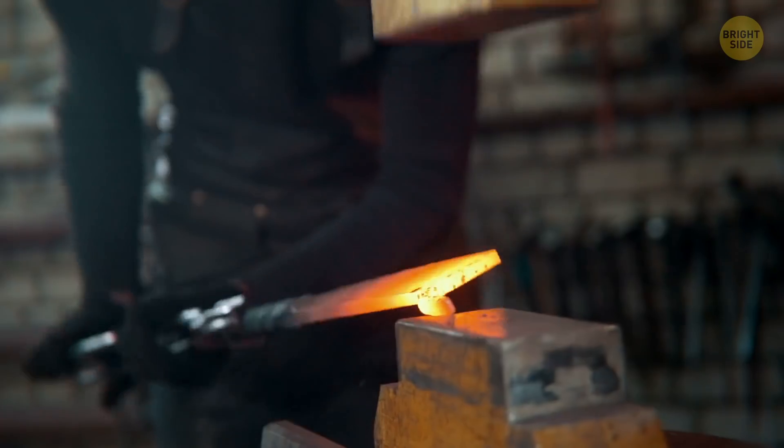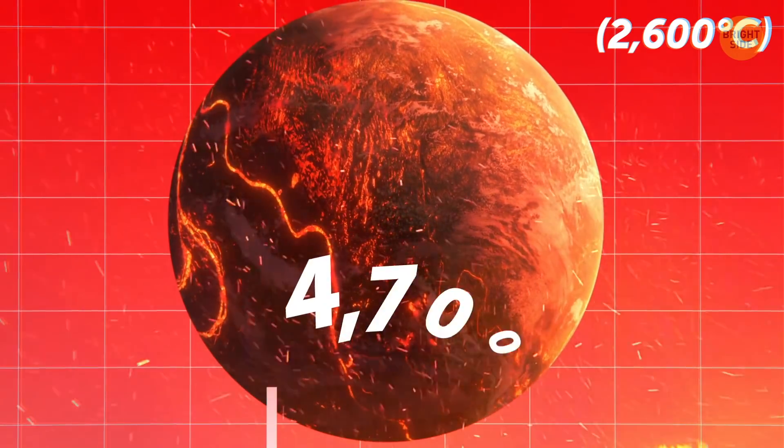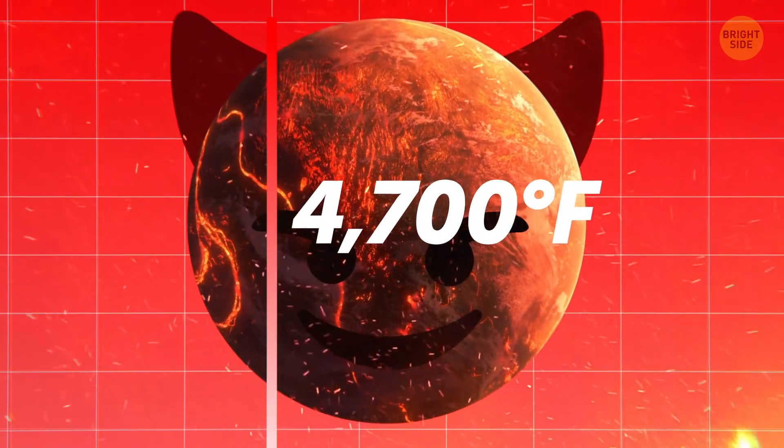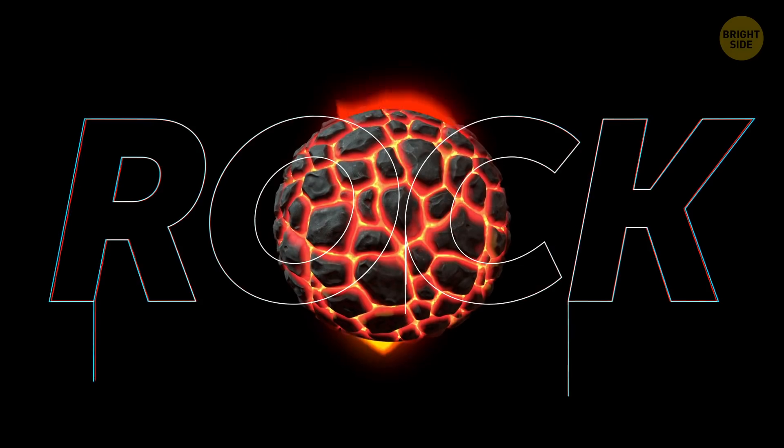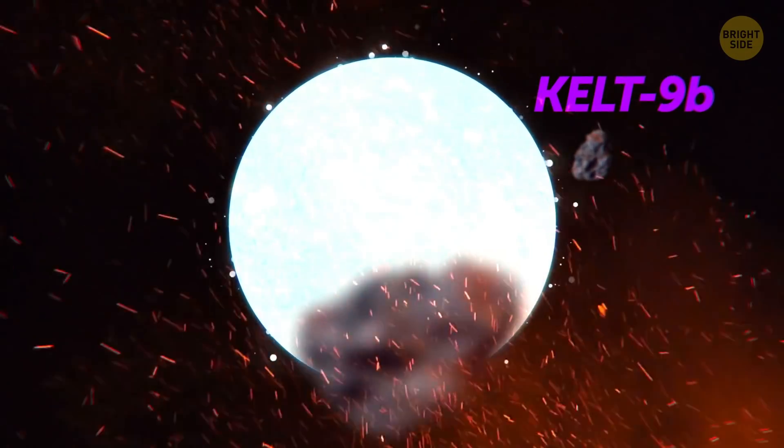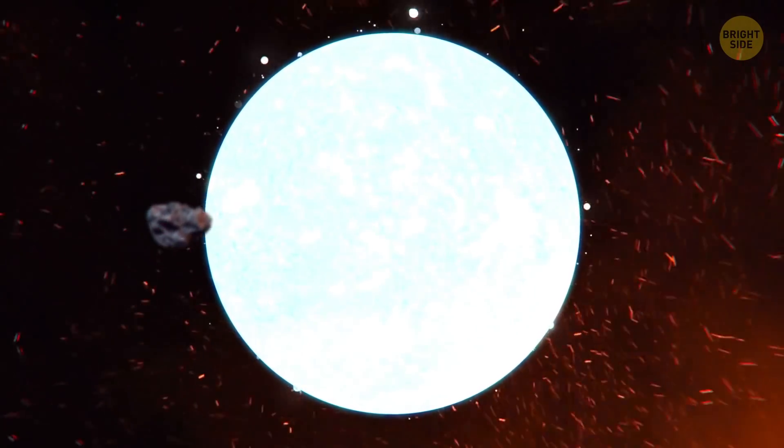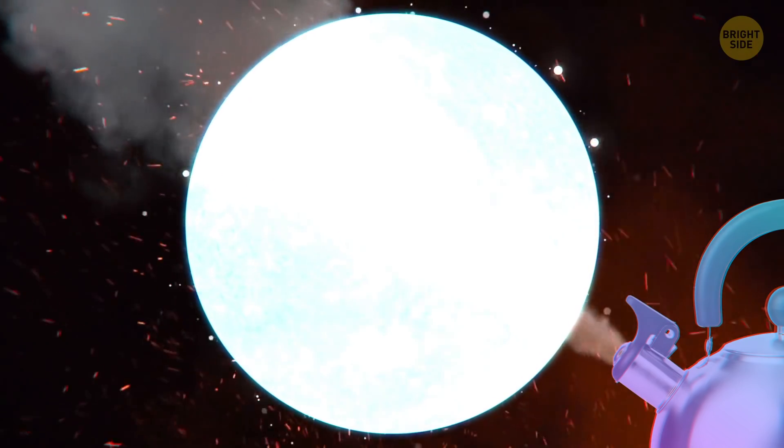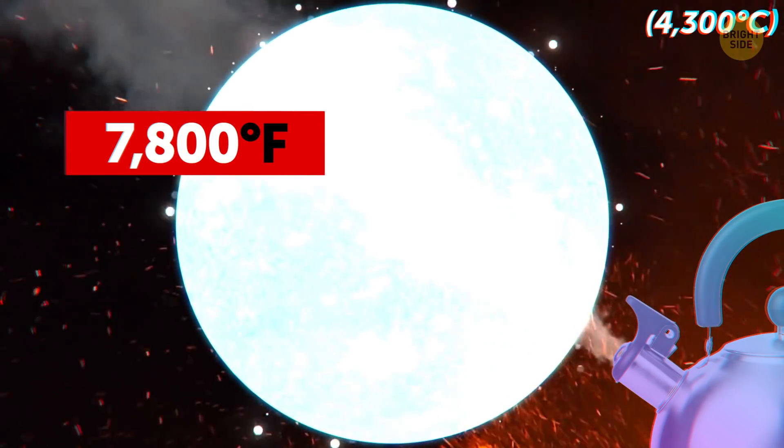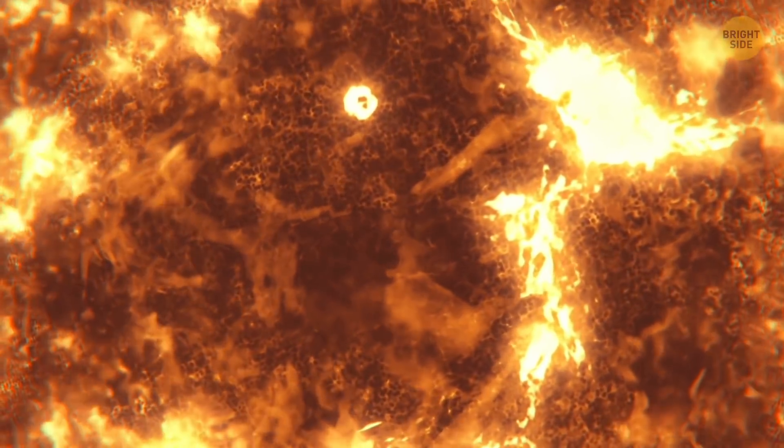If your hobby is metallurgy, the exoplanet Co-Rot-7b has a surface temperature that reaches 4,700 degrees. That's enough to melt and evaporate rock, not only metal. Kelt-9b might even be too hot for such a hobby. The surface temperature on the day side of this massive planet twice the size of Jupiter is higher than on some stars. It can reach 7,800 degrees. Our own Sun is only a couple of thousand degrees hotter.